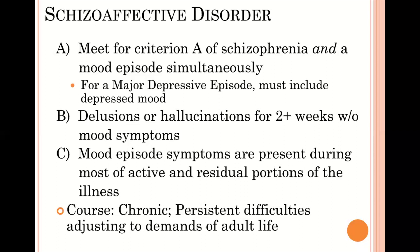Looking at their active and residual periods, mood symptoms persist throughout. As an example, someone may have had hallucinations and delusions for a few months before a major depressive episode began. But for the majority of their illness — which can span decades — they experience both psychosis and major depression simultaneously. Even after psychosis has dwindled into the residual phase, those mood symptoms persist. We add specifiers: bipolar type if they have mania and depression, or depressive type if they have only had major depressive episodes.